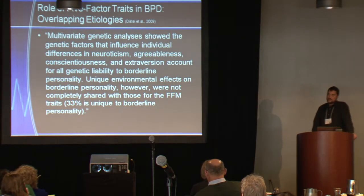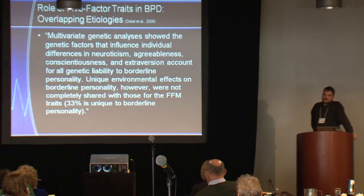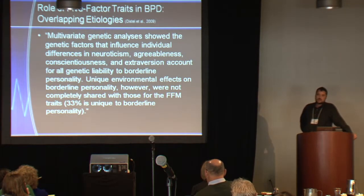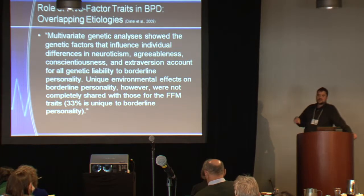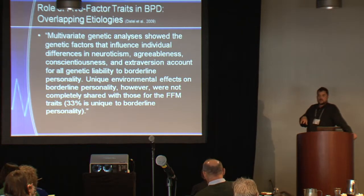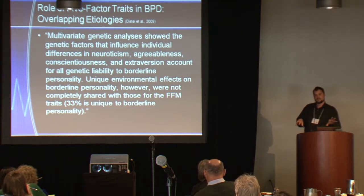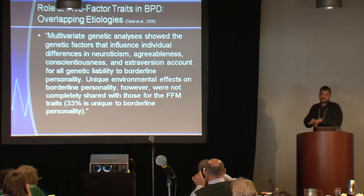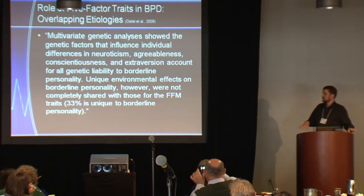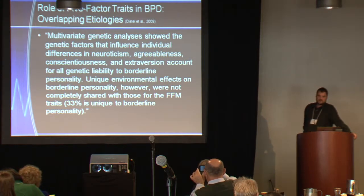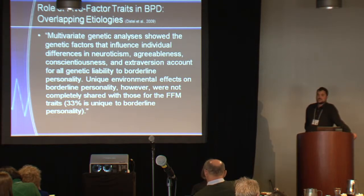In addition, a couple of studies suggest that the heritable components of borderline personality disorder overlap completely with the heritable components of traits. So whatever is heritable about borderline personality disorder seems to be the same things that are heritable about normal personality traits. There are non-shared etiological environmental influences, but whatever seems to be dispositional about BPD appears to be common to normal traits.